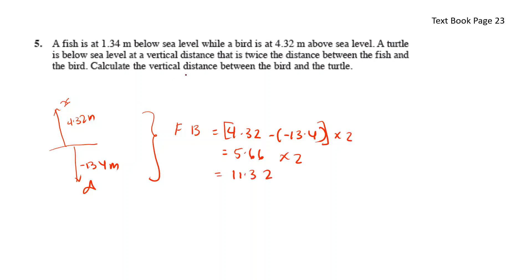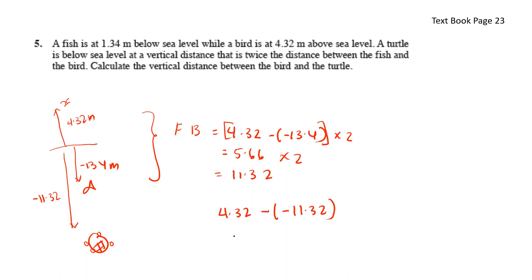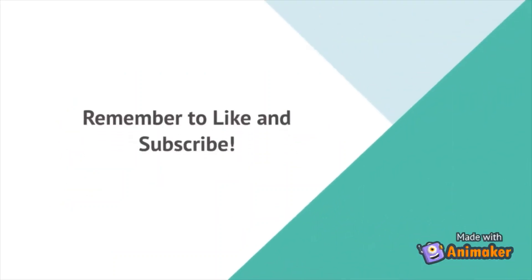To calculate the vertical distance between the bird and the turtle: the turtle is at negative 11.32 meters, so the distance is 4.32 minus negative 11.32, which gives 15.64 meters.